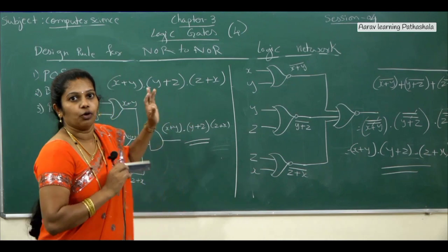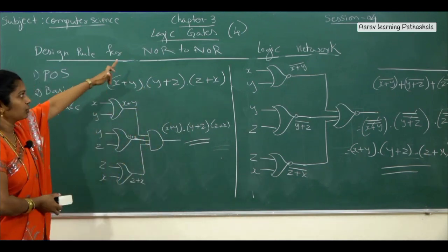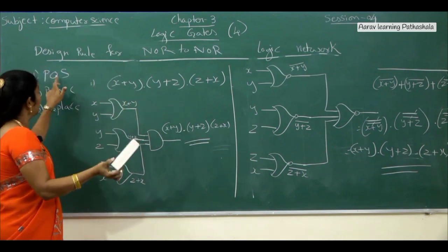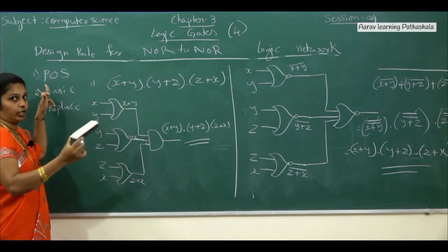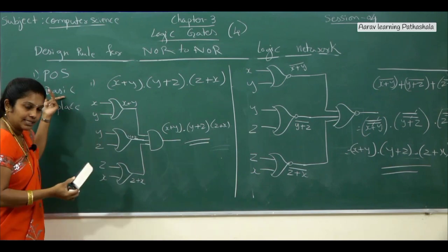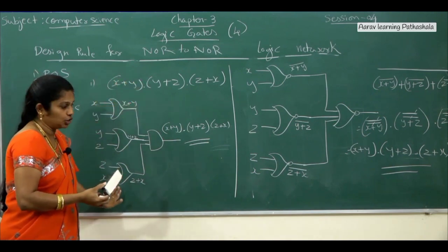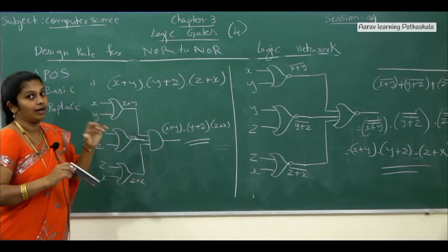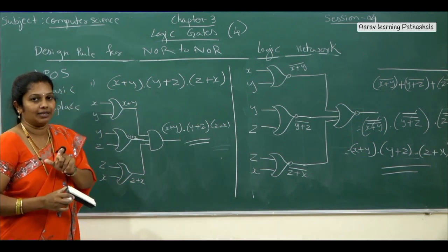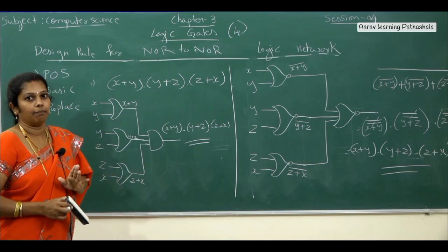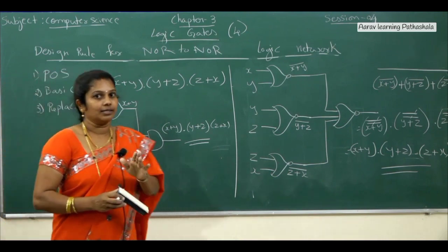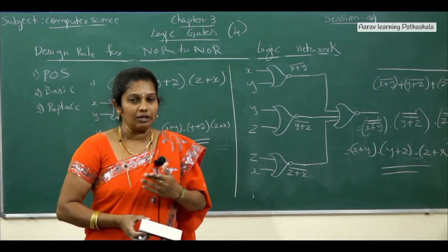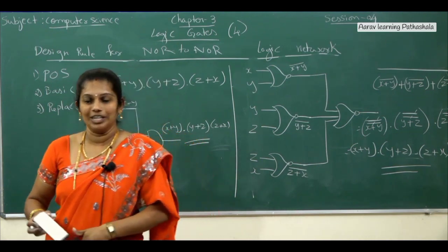This confirms that by using only NOR gates we can write the circuit diagram, and by using only NAND gates also we can write the circuit diagram. The key point is: for NOR-to-NOR use product of sum format, and for NAND-to-NAND use sum of product format. First write the expression using basic gates, then replace with NOR or NAND as required by the question. This completes the logic gate chapter. Thank you all — next class we will meet with a new chapter.